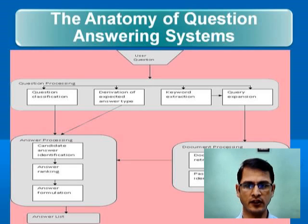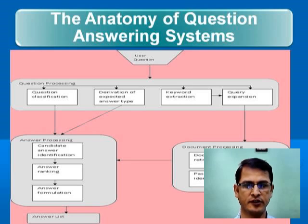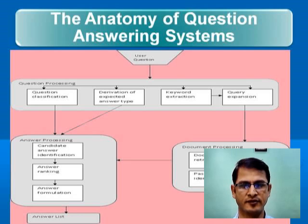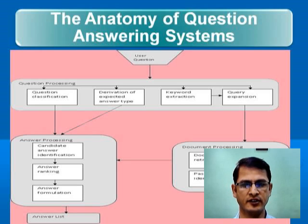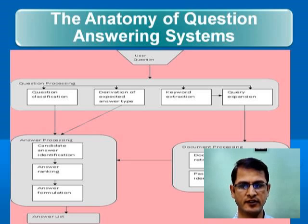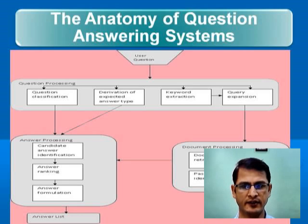Now, the anatomy of the question answering system. A typical question answering system consists of three different phases: question processing phase, document processing phase, and answer processing phase. Question processing phase consists of sub-phases: classification of questions, derivation of expected answer types, keyword extraction, and query expansion. Document retrieval consists of document retrieval and passage identification. Answer processing phase consists of candidate answer identification, answer ranking, answer formulation, and finally presenting the answer to the user.